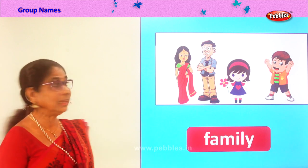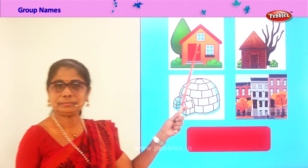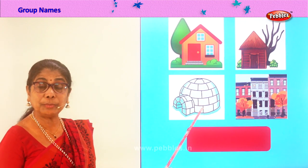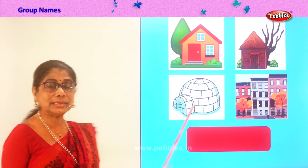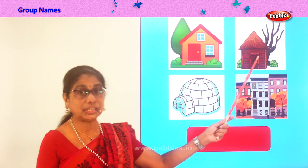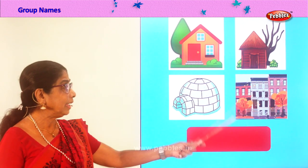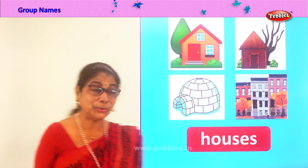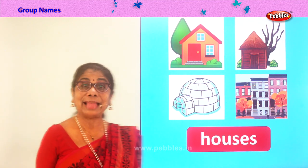Let's look at another group name and enjoy finding it. What is this? An igloo — the house of an Eskimo, made out of ice blocks, and it will be warm inside. Here is a number of buildings together — flats. Here you have a hut and a single house. So you have a house, a hut, a big building with flats, and an igloo. What is the common group name? Houses! Different types of houses. Spell houses: H-O-U-S-E-S.